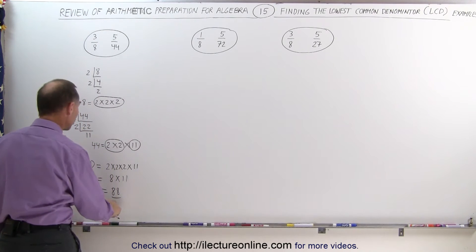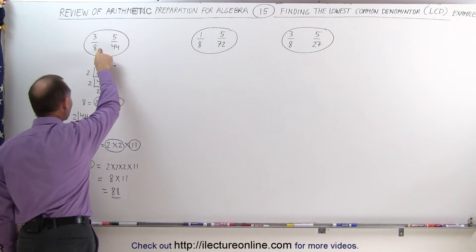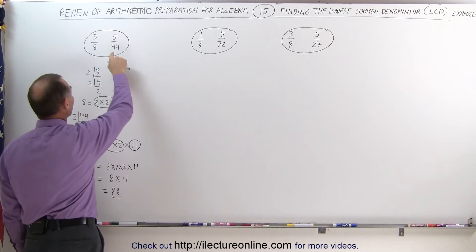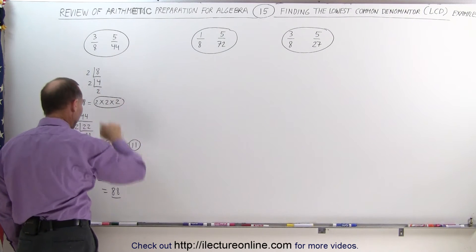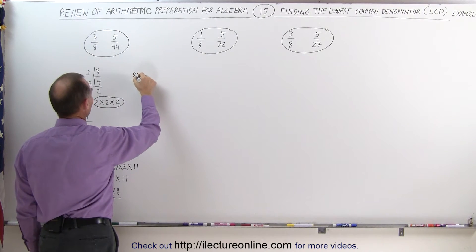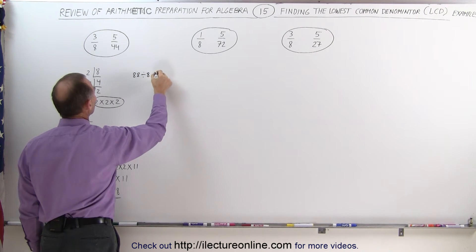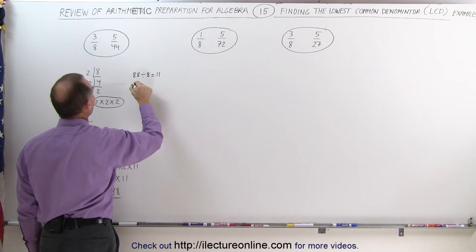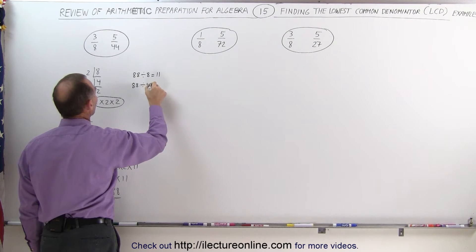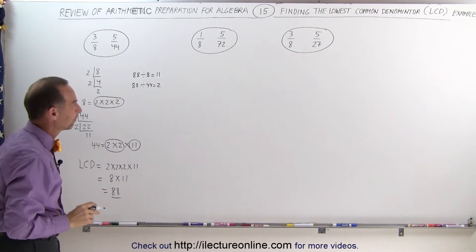A quick check will show that both 8 and 44 go into 88 evenly. 88 divided by 8 is equal to 11 — that's an integer. And 88 divided by 44 is equal to 2 — again an integer — so we have it correct.